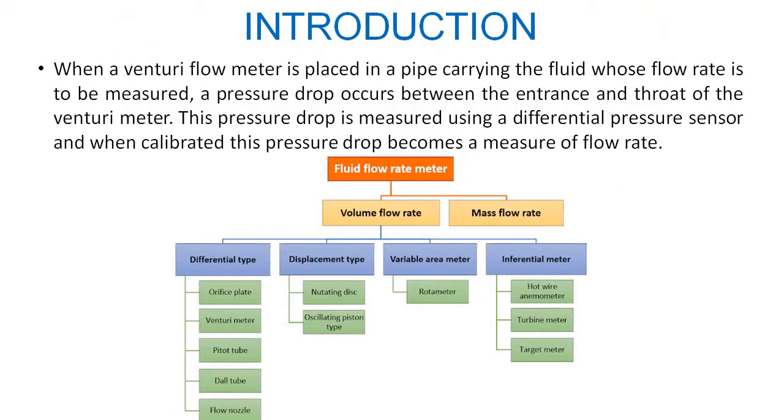First of all, introduction. When the Venturi flow meter is placed in a pipe carrying the fluid whose flow rate is to be measured, the pressure drop occurs between the entrance and the throat of the Venturi meter. Now this pressure drop is measured using a differential pressure sensor. And when it is calibrated, this pressure drop becomes the measurement of the flow rate.